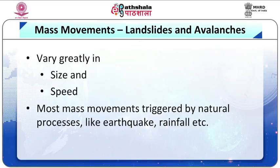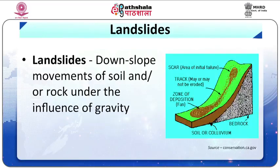Most mass movements are triggered by natural processes such as earthquakes, intense or prolonged rainfall, or rapid snowmelt. However, some of the most damaging landslides occur in materials formed by humans, such as mining waste and garbage heaps. People often play a key role in the creation and triggering of mass movements.